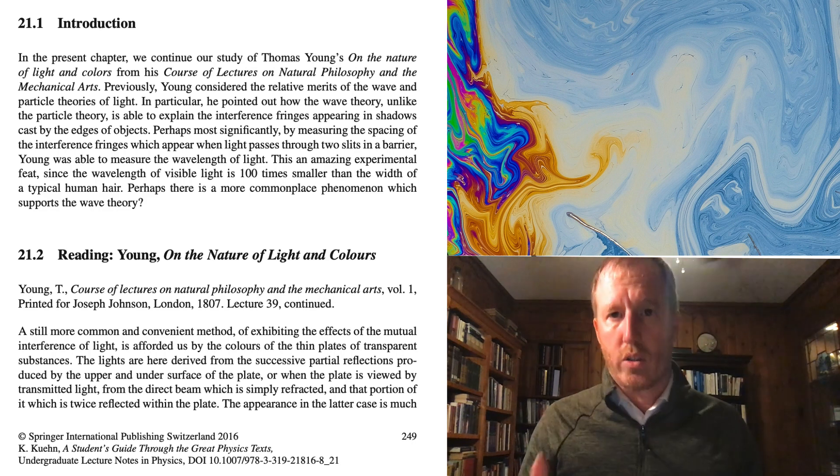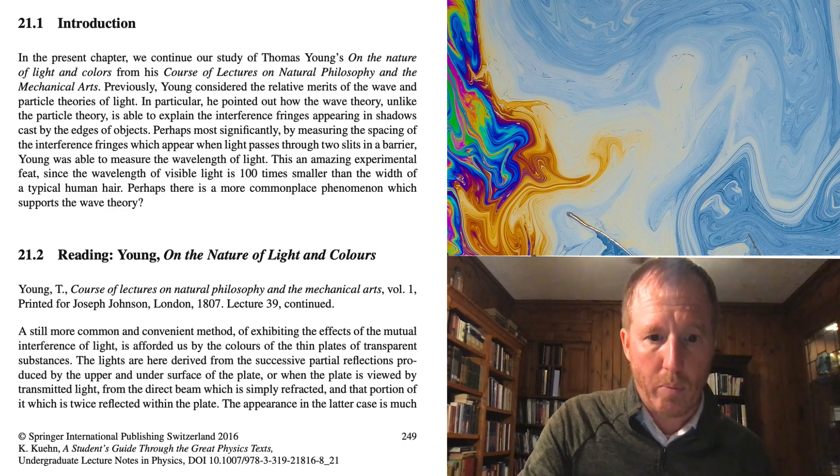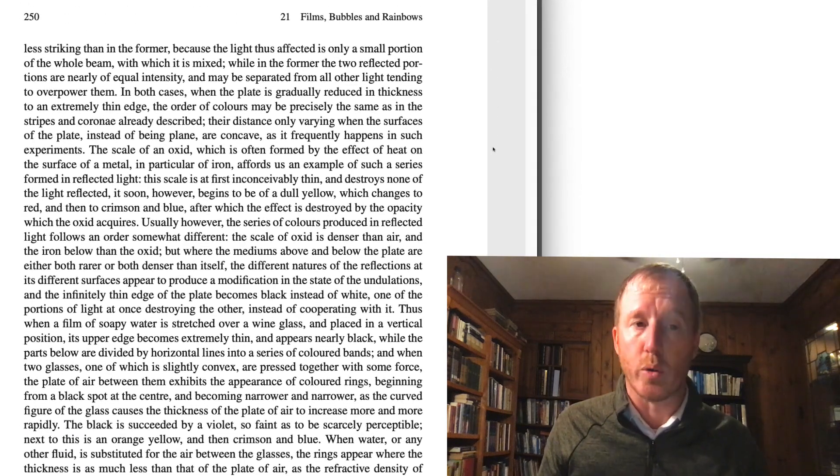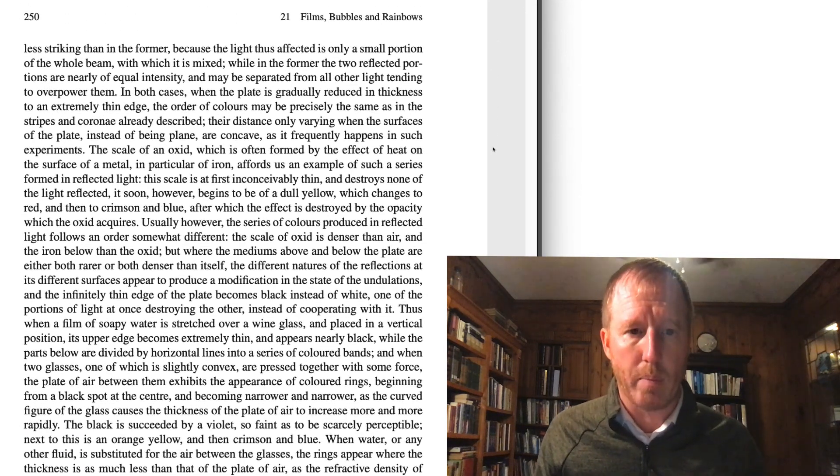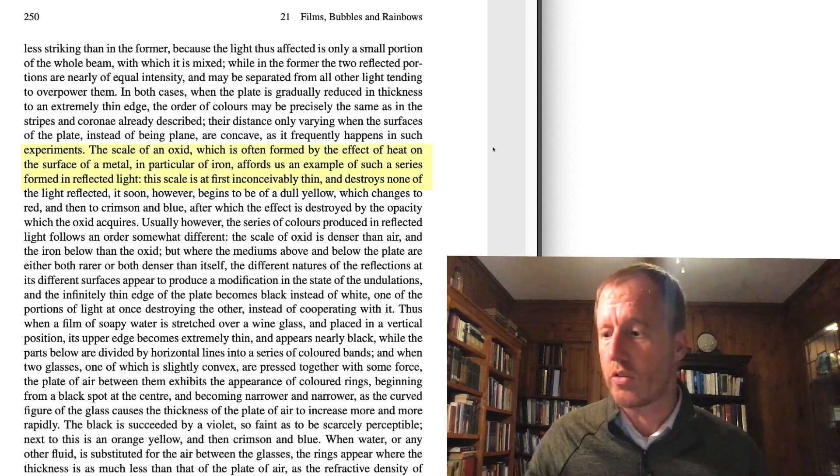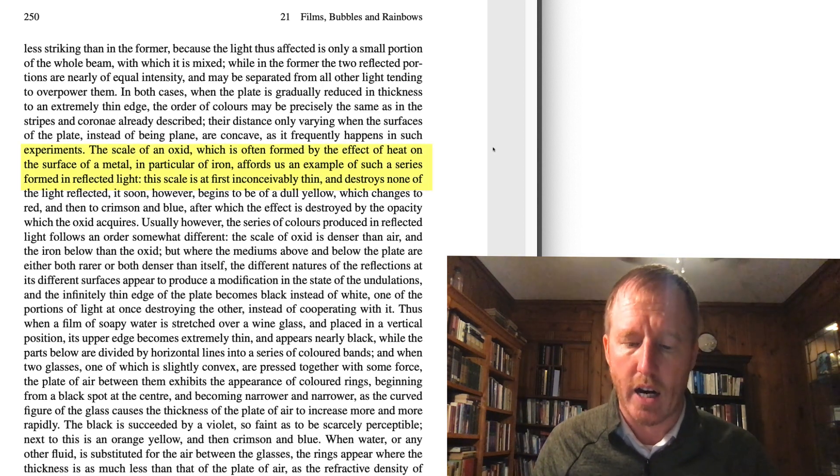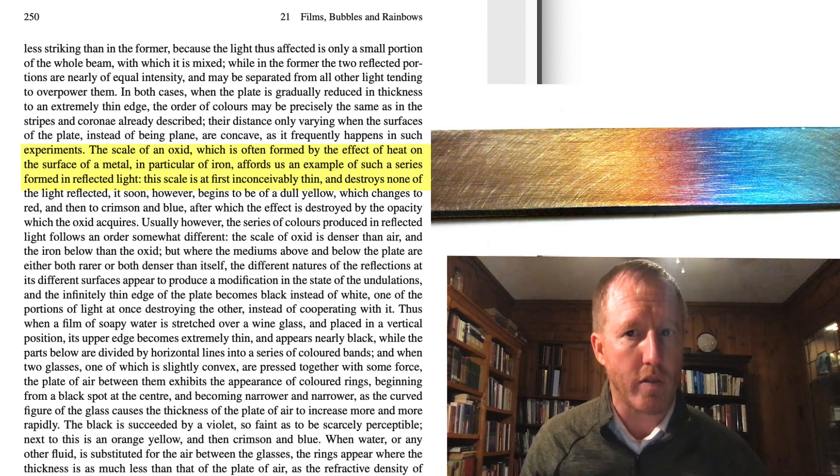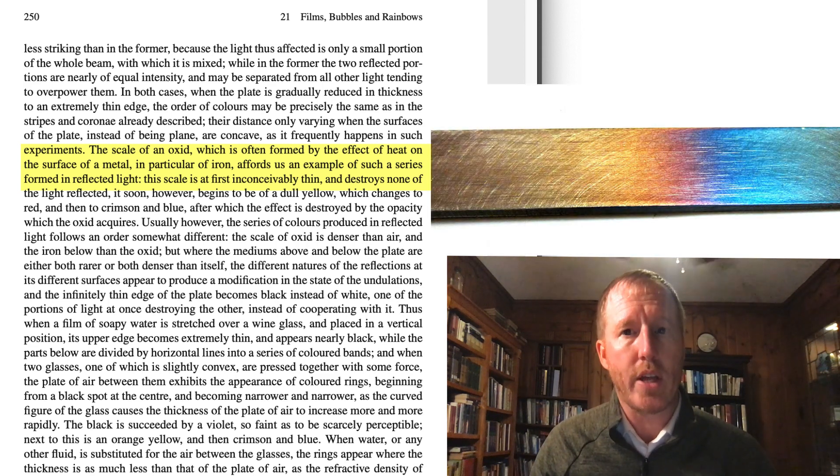So we're going to talk about that in some detail in the next few minutes. Let's jump to the next page, page 250. If you look at this long paragraph on page 250, this is where he explains a couple of these examples that I've just mentioned. The colors of soap films and the colors of thin plates. The first example that he gives is what he calls the scale of an oxide formed by heating. So you might have noticed sometimes if there is a piece of metal and if you clean this metal or polish it very well, and then you heat it, sometimes you'll see these colors kind of creeping over the surface of the metal.